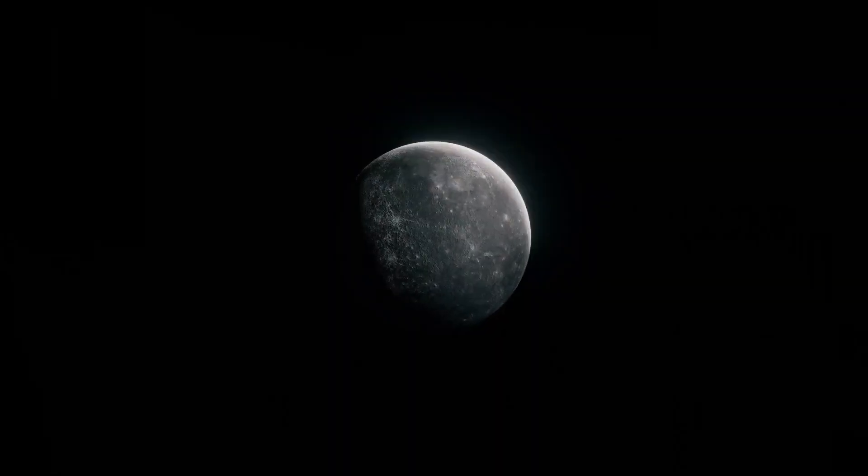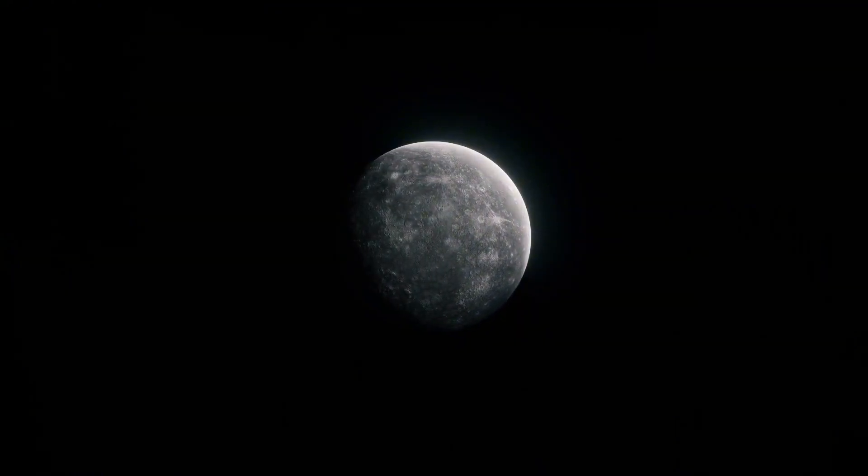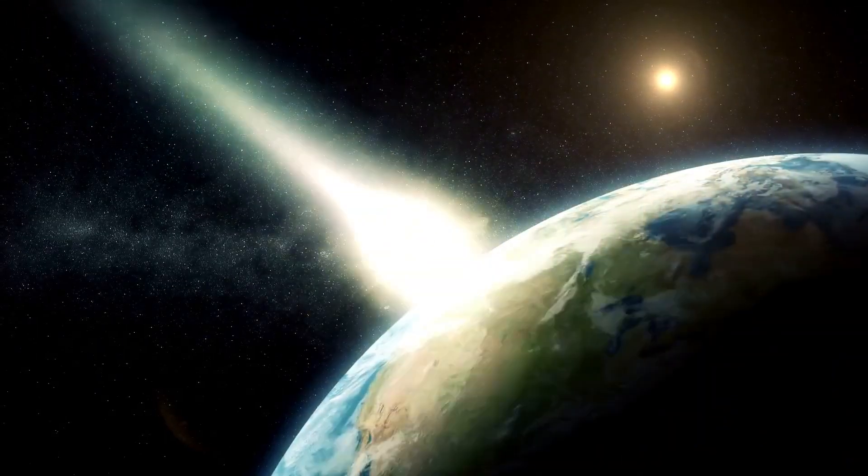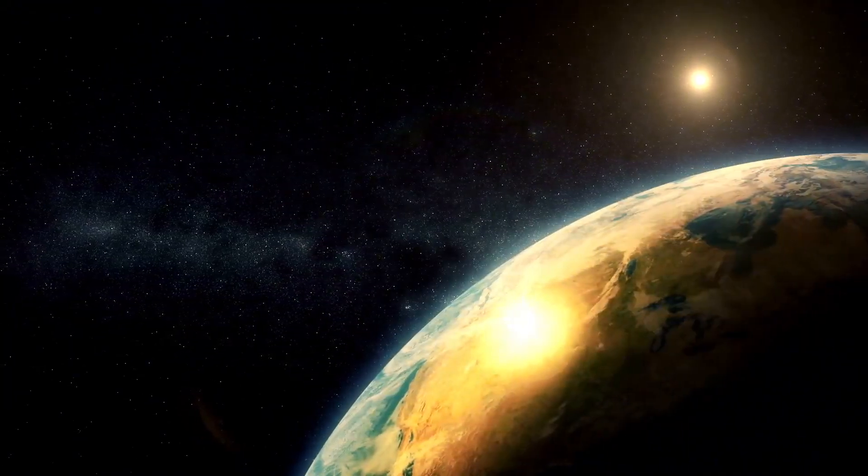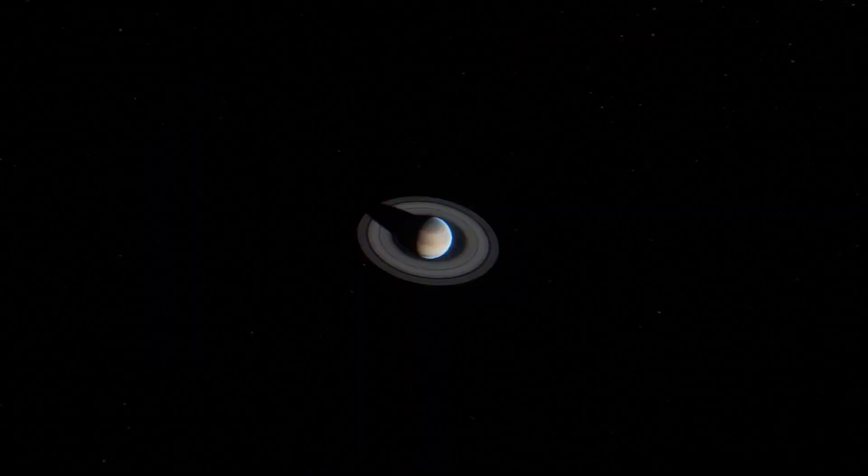One of the most intriguing aspects of Pluto's orbit is its intersection with Neptune's path. For about 20 years in each orbit, Pluto actually comes closer to the Sun than Neptune, defying what we might expect from their positions in the solar system. This leads to the natural question, why hasn't Pluto collided with Neptune?